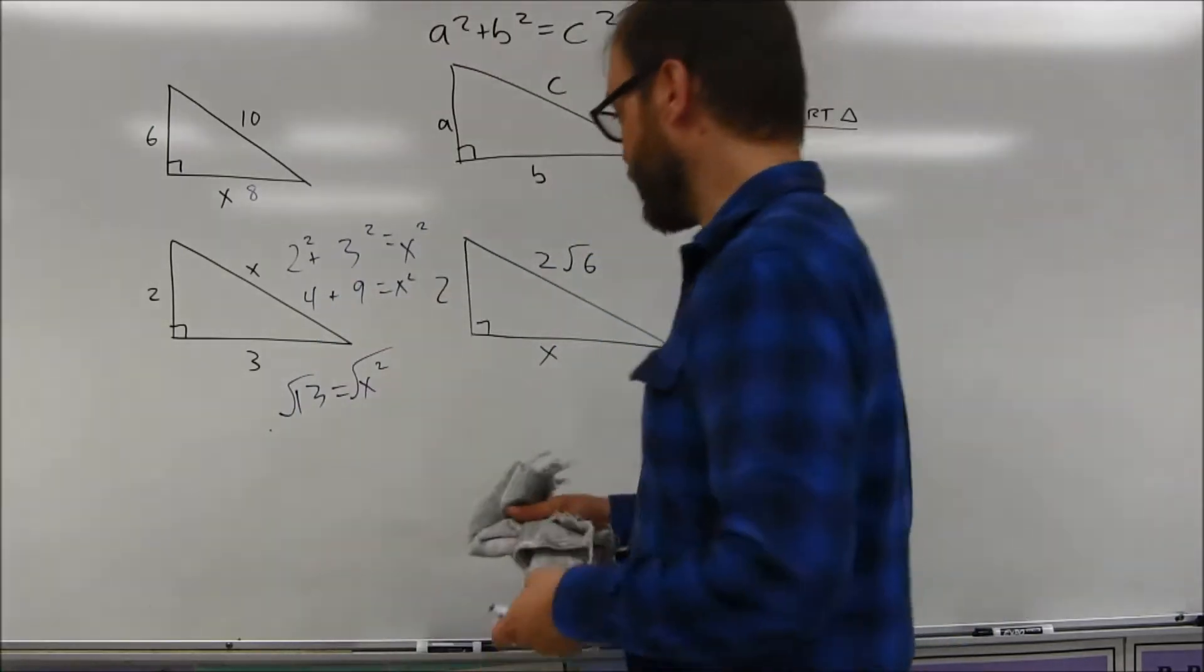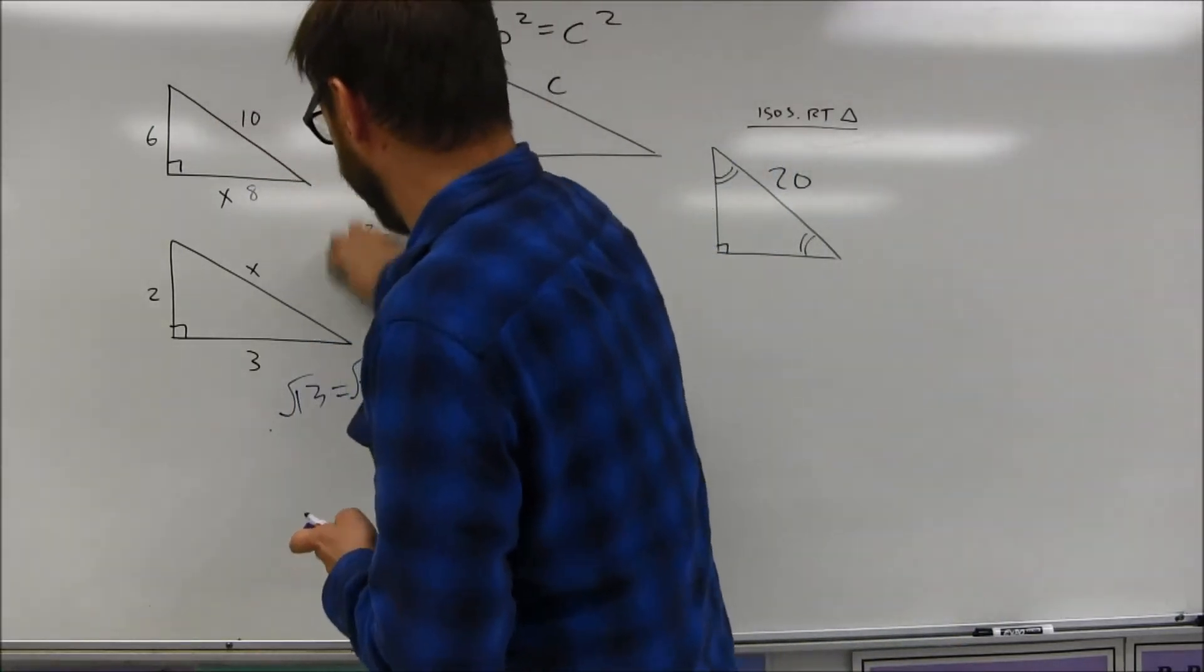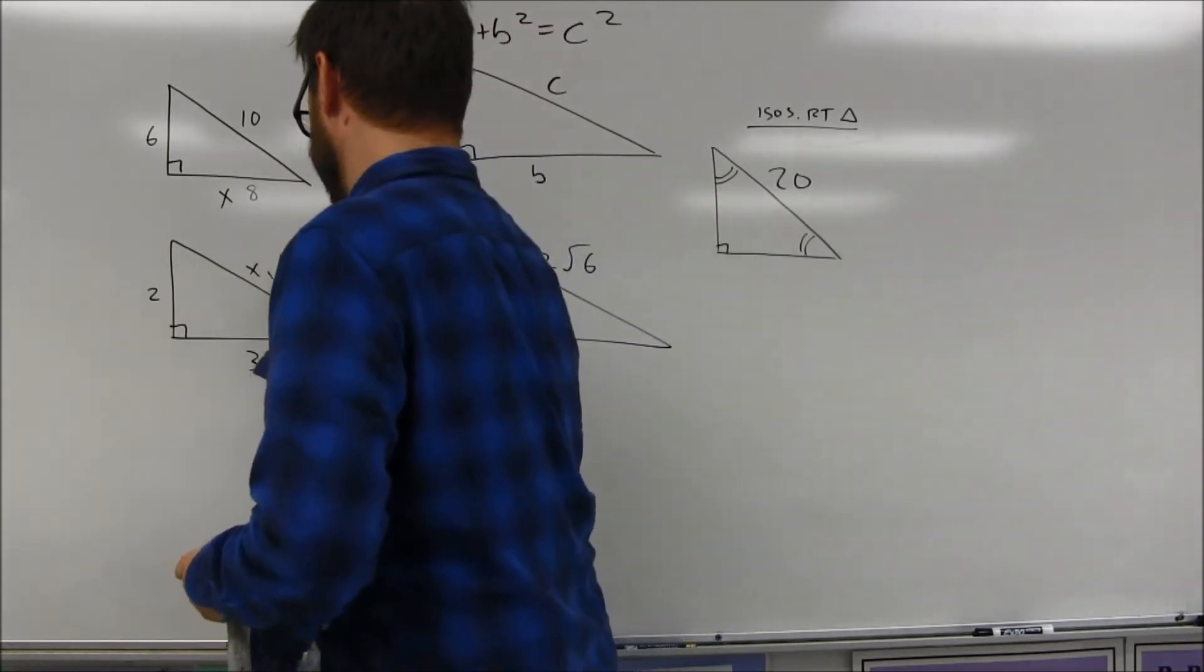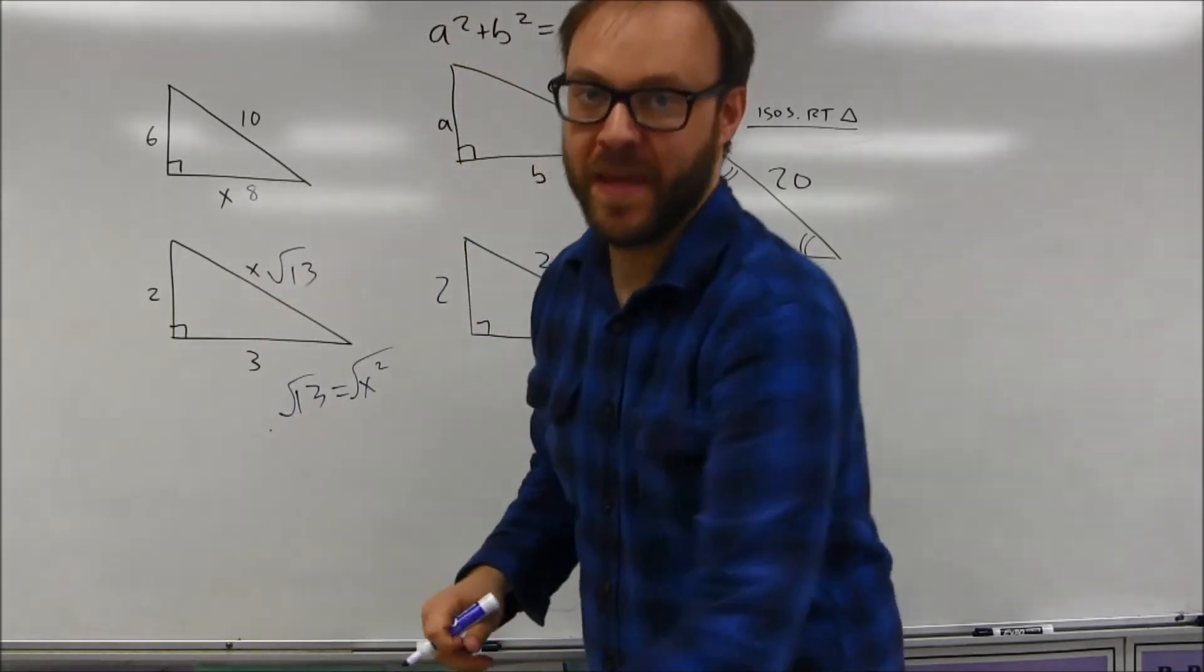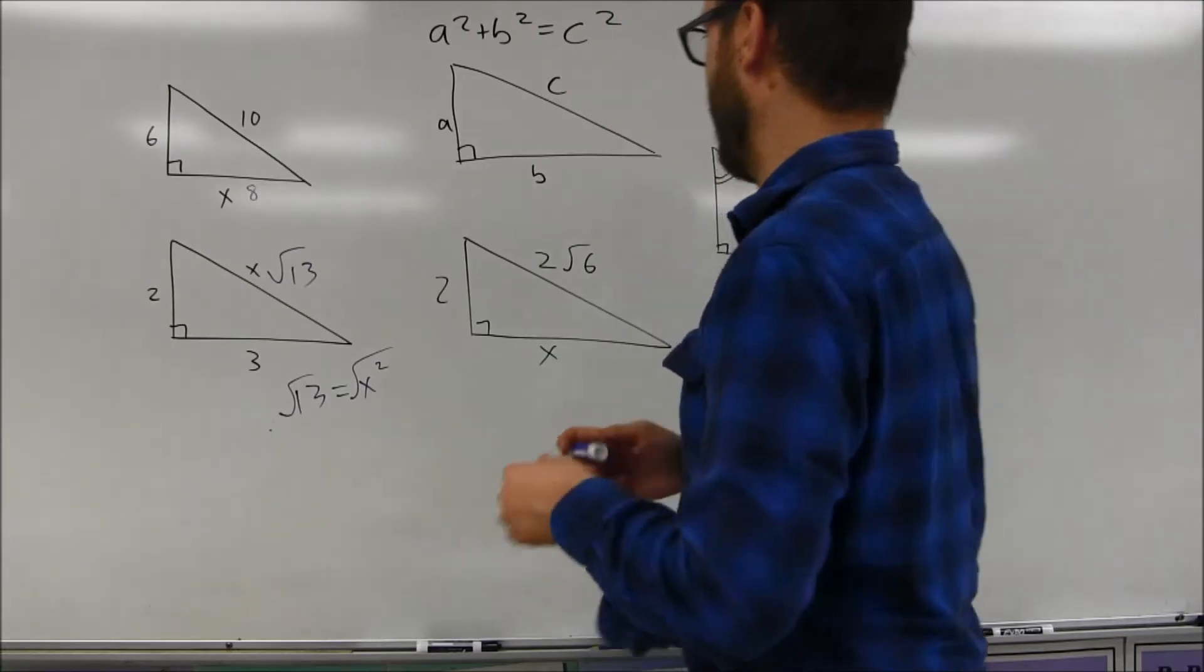Do check your square root. Sometimes they'll simplify. Sometimes they won't. In this particular case, it's not going to simplify. So you would just list the square root of 13 and you would move on. Again, unless a question says to round, leave it in radical form.